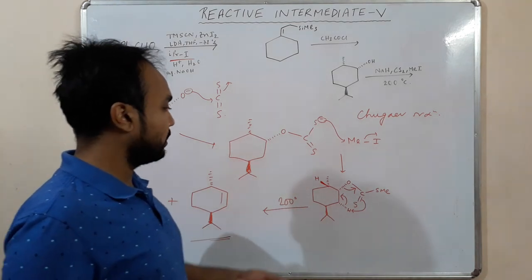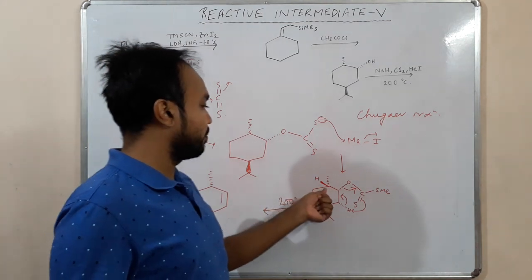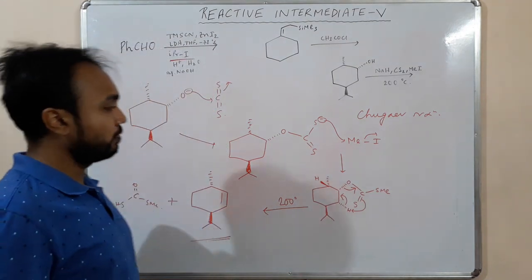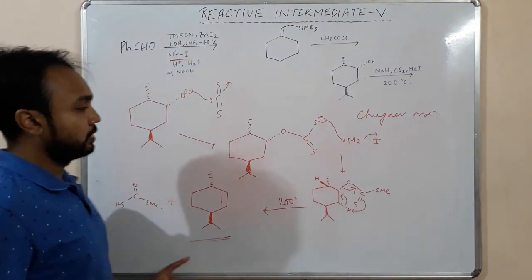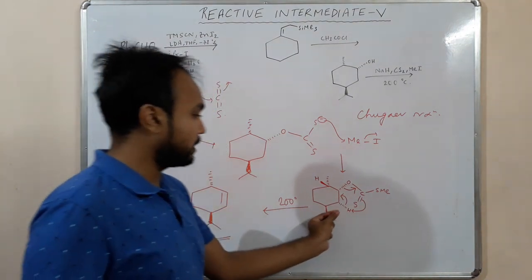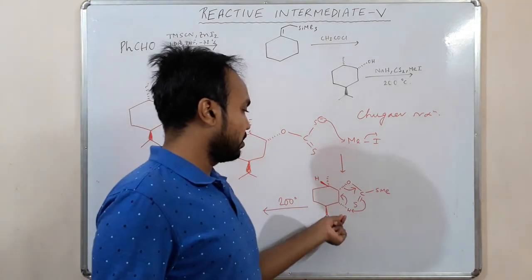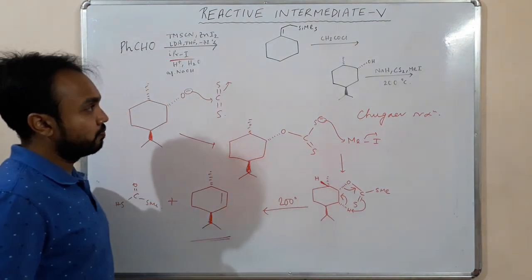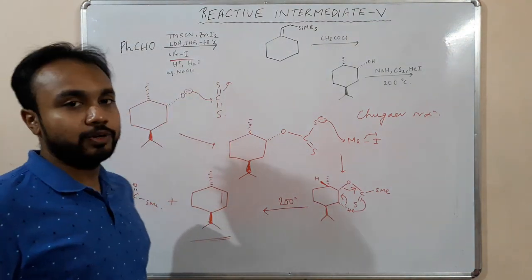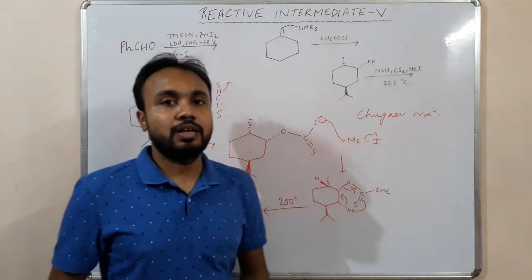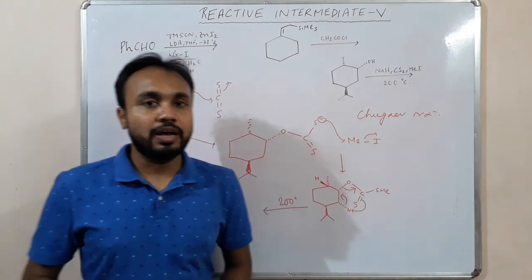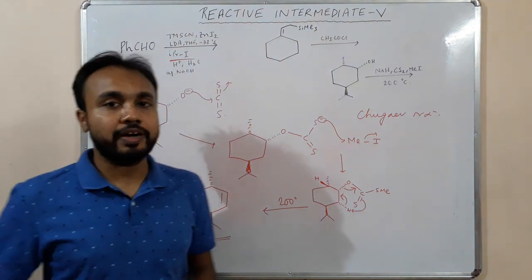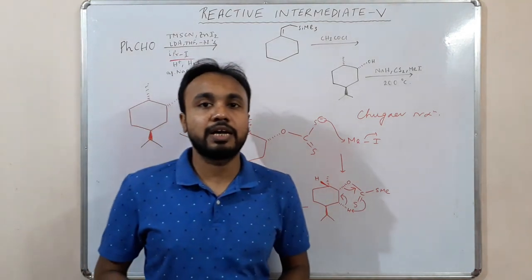In the answer options they will give different possible double bond positions — just identify the syn hydrogen to find the correct major product. That's all for this video. I hope you liked it and I will upload more videos on reactive intermediates. Thanks for watching.